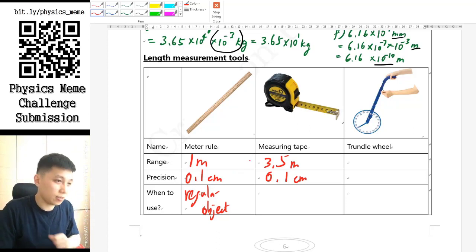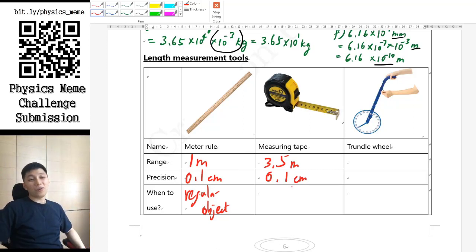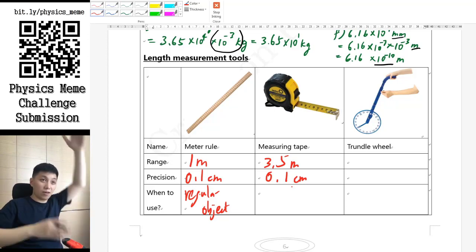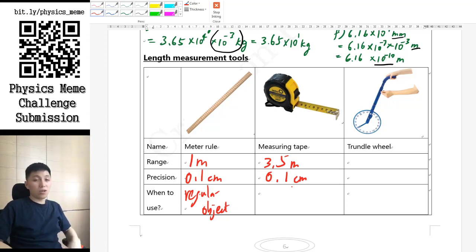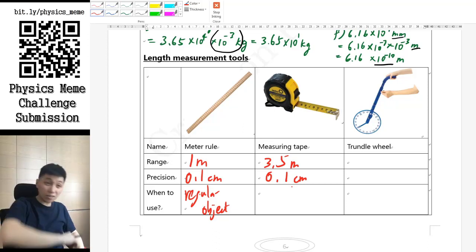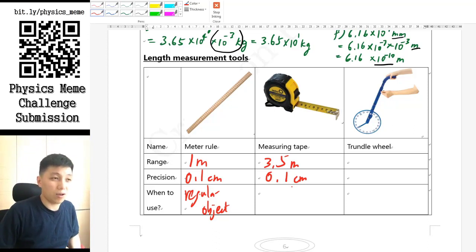For the time when you will be using measuring tape, obviously is when you don't have enough length for meter ruler. As in maybe something that is, say, the height of a door—then yeah, usually is around 2 meters roughly. So then using a meter ruler would not be able to help you.